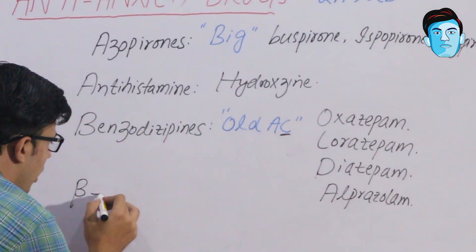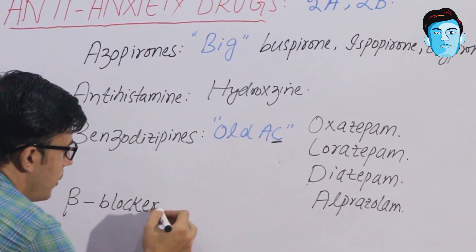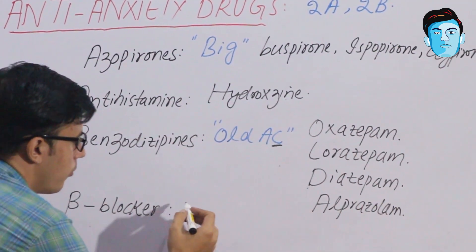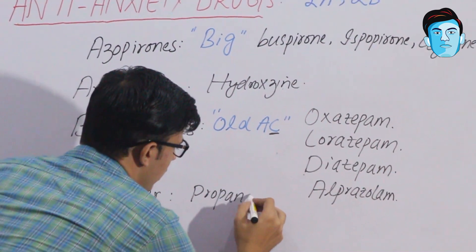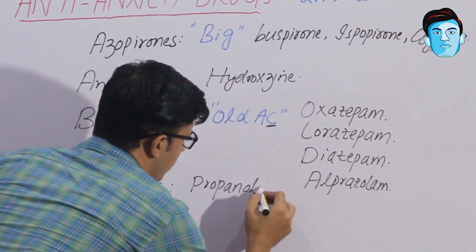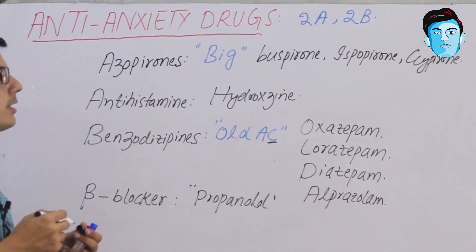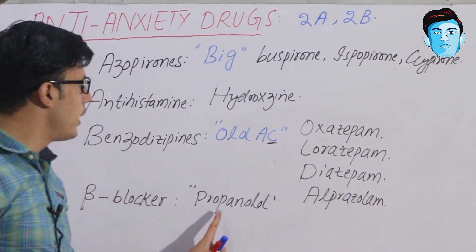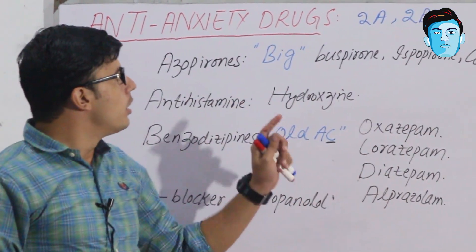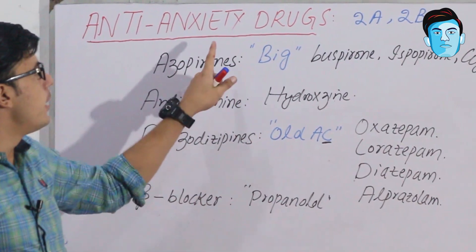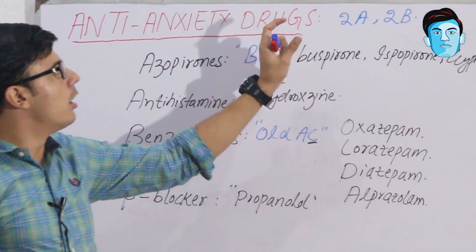Another B stands for beta blockers. In the beta blocker group we have propranolol as an anti-anxiety drug. So to summarize, anti-anxiety drugs contain two important tricks: 2A and 2B.